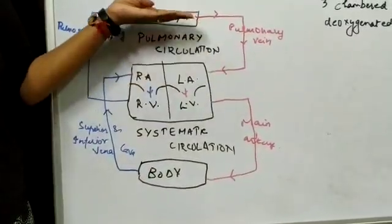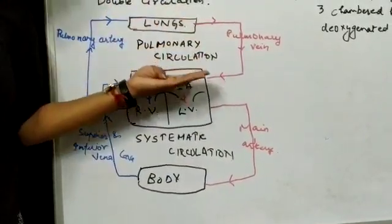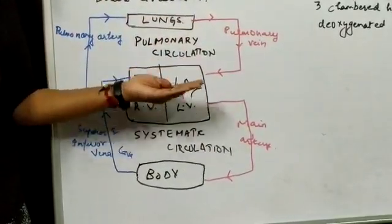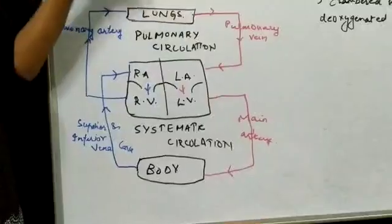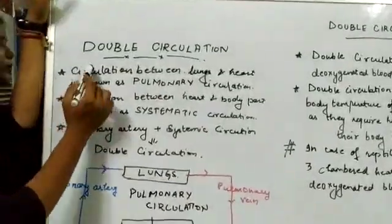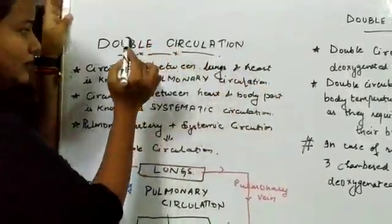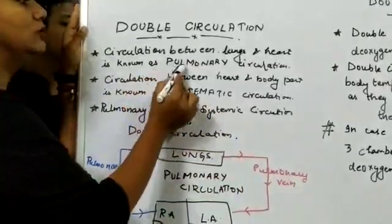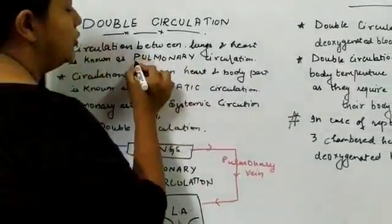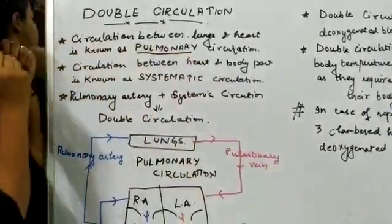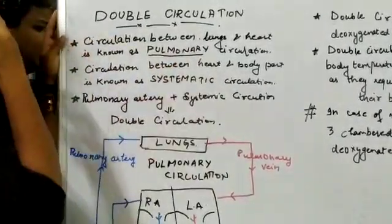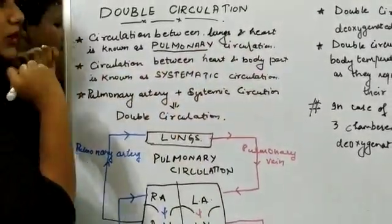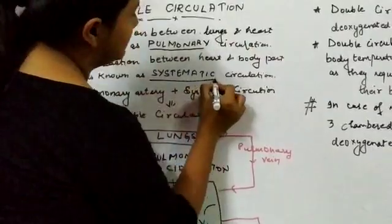Ek baar between heart and lungs, aur doosri baar between heart and body parts. The first circulation is between lungs and heart — from heart to lungs and lungs back to heart. The second is between heart and body parts — from heart to body parts and body parts back to heart. The circulation between lungs and heart is known as pulmonary circulation. And the circulation between heart and body parts is known as systemic circulation.